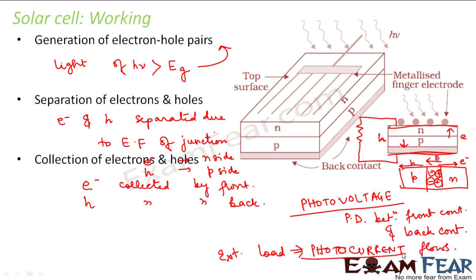In summary, when light falls on the solar cell, electron-hole pairs are generated because the light has energy greater than the energy gap of the semiconductor. The electron-hole pairs are separated due to the electric field of the depletion region. The electrons get collected by the front contact and the holes get collected by the back contact. As a result, a photo voltage develops, and when connected to an external load resistance, a photo current flows through the circuit. This is how solar energy gets converted into electrical energy.